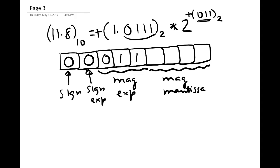Then we have the 4 bits for the magnitude of the mantissa: 0111. We don't need to represent the leading 1 before the radix point because, in order to have a non-zero digit before the radix point, the only non-zero number available in binary is 1 — so it is always 1 and is implicit. This is the representation of 11.8 base 10 in this hypothetical 9-bit floating point representation.